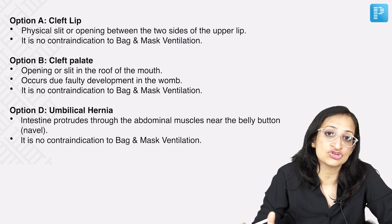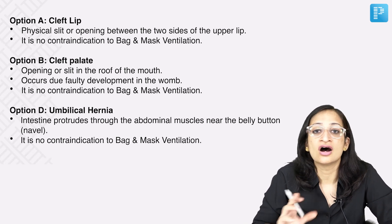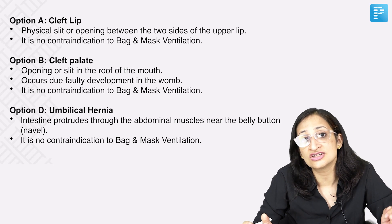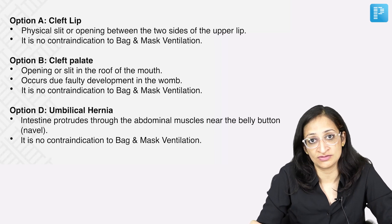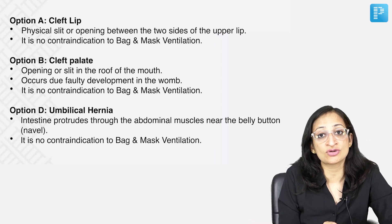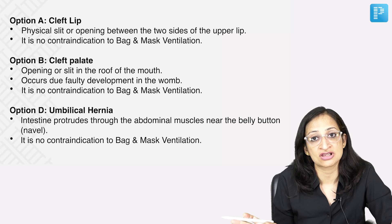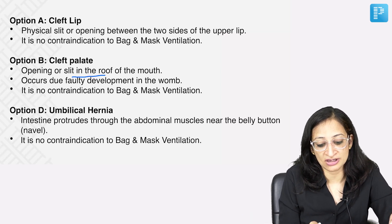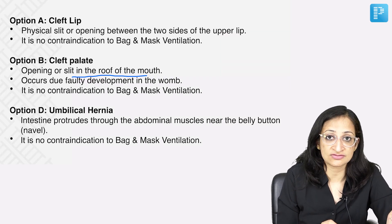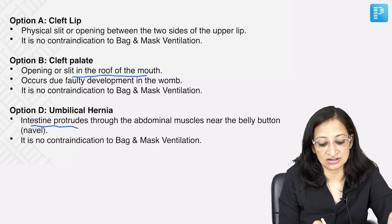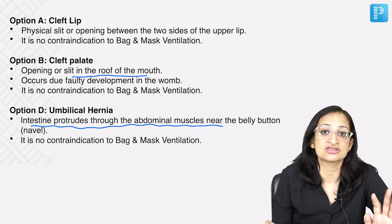Another new feature of the Q-bank is an explanation about each and every option, so you don't have difficulty arriving at the best answer and you gain additional information to solve related questions. Cleft lip is a slit opening between the two sides of the upper lip — it is not a contraindication to bag and mask ventilation. Cleft palate is a slit or opening in the roof of the mouth due to faulty development in the womb — also not a contraindication. Umbilical hernia is a defect where the intestine protrudes through the abdominal muscles near the umbilicus — again, not a contraindication.